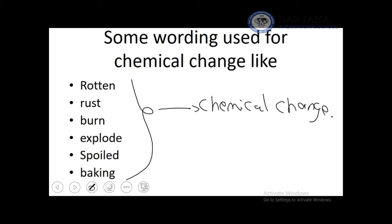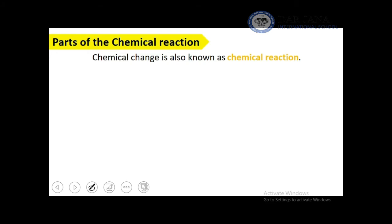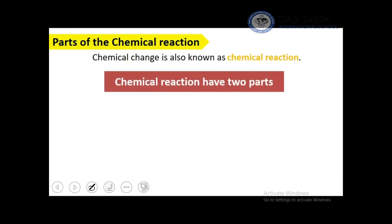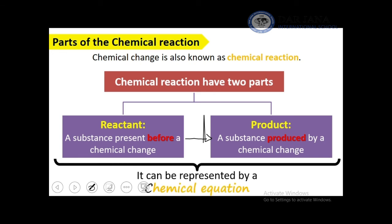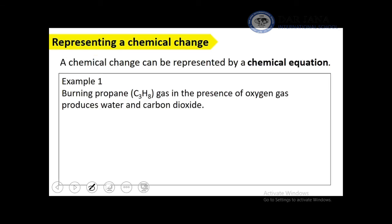In a chemical change, we are changing the identity of the substance — not keeping the same chemical properties. A chemical change and a chemical reaction mean the same thing. The parts of a chemical reaction are reactants and products, separated by an arrow meaning 'to yield.' Reactants are present before any chemical change; products are produced after.